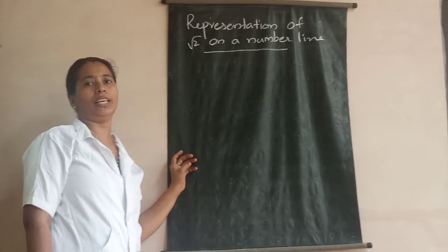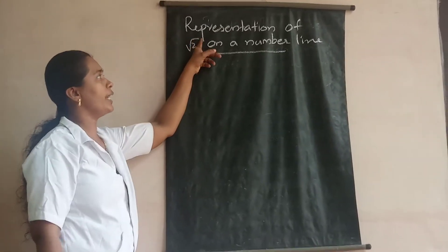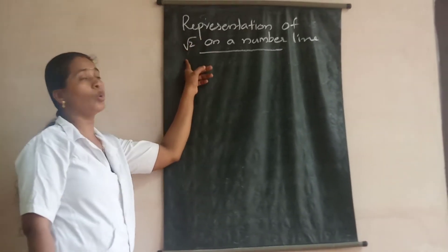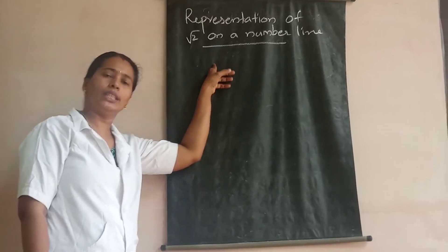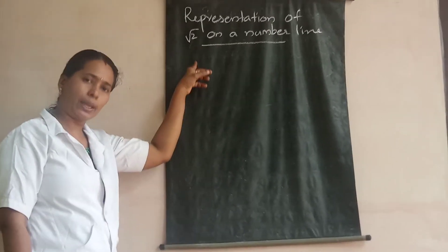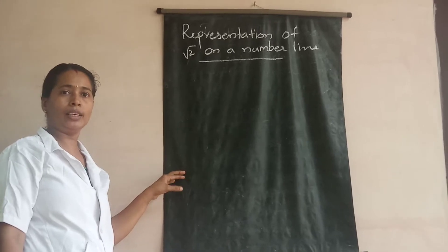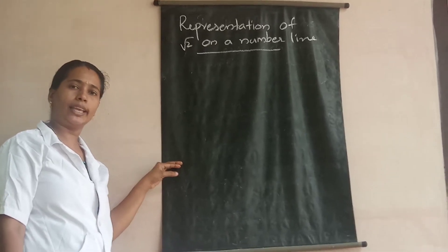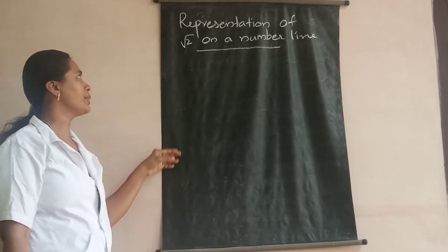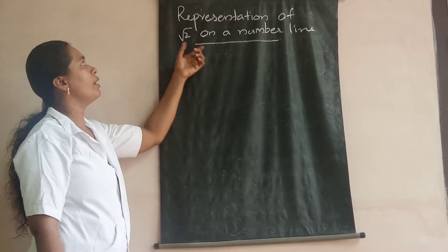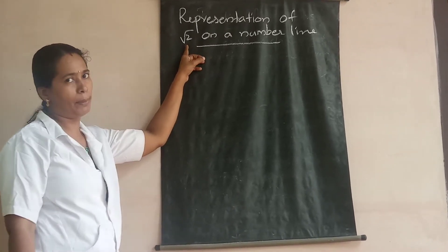Now let us begin with a construction — representation of root 2 on a number line. To do this representation you need your protractor, compass, scale, and ruler. So let us begin. Representation of root 2 on a number line.